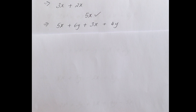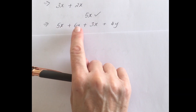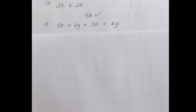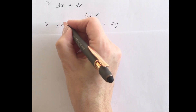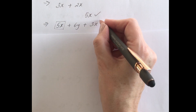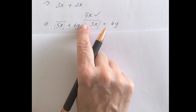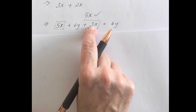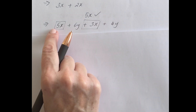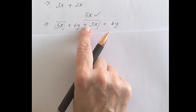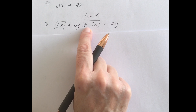Feel free to press pause and try the next one yourself. Remembering our rule of thumb — you can only add together terms that are the same. Here we have x terms and y terms. What I like to do is box off terms that are the same and circle other terms that are the same. So 5x can be added together with the 3x. Make sure you include the sign to the left when boxing — if there's no sign it's always positive.